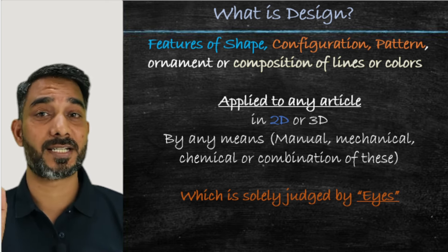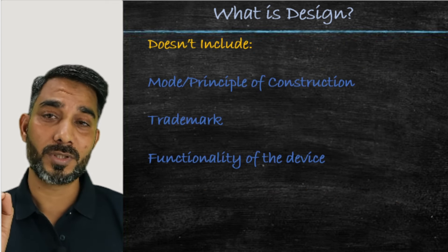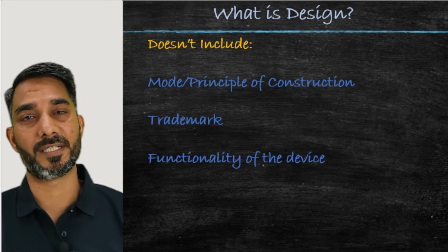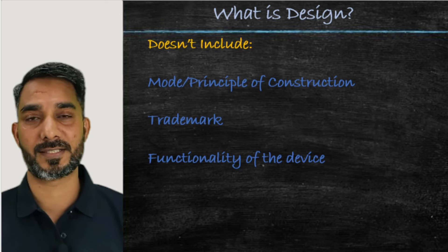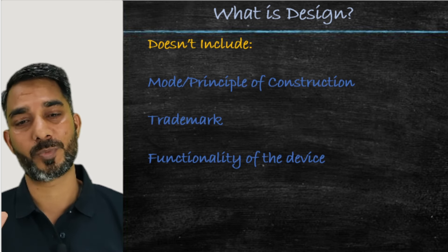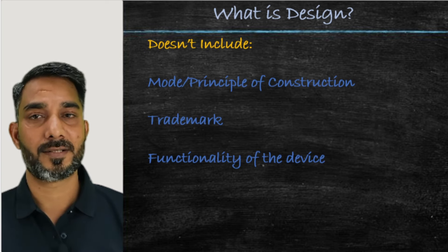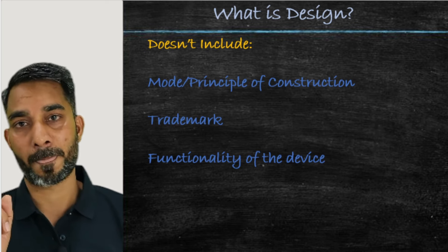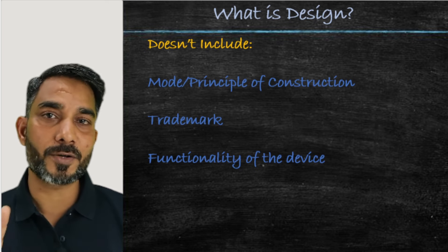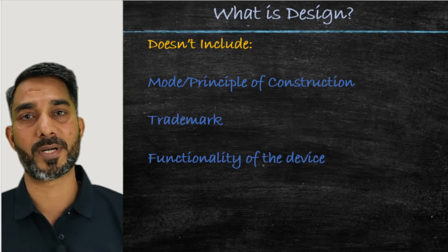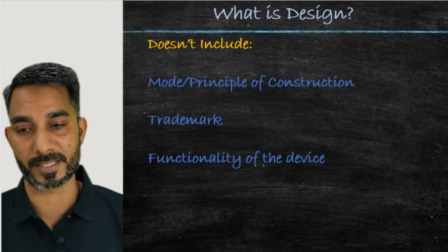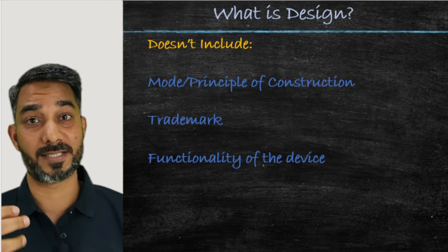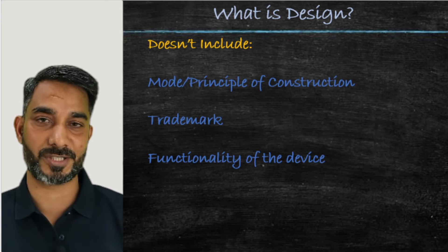So what is not considered as design? It does not include the way the design is constructed — whether manually, mechanically, chemically, or a combination. We do not care about the construction method; what we care about is the final design and to what article it is being applied. Having a trademark on any design doesn't mean it's a new design — trademarks on design registrations are not accepted as design elements. Similarly, the functionality of the device or article is not considered while evaluating the design of an article.